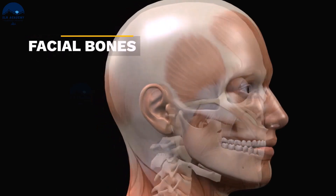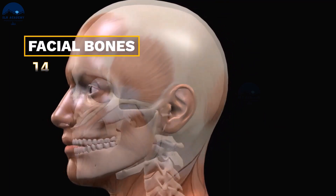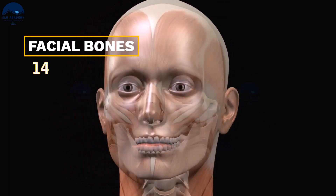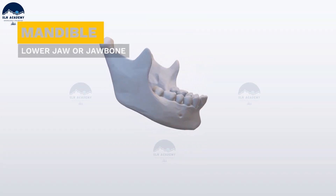Facial bones. The facial region is made up of 14 skeletal elements which form the front part of the skull. Mandible.